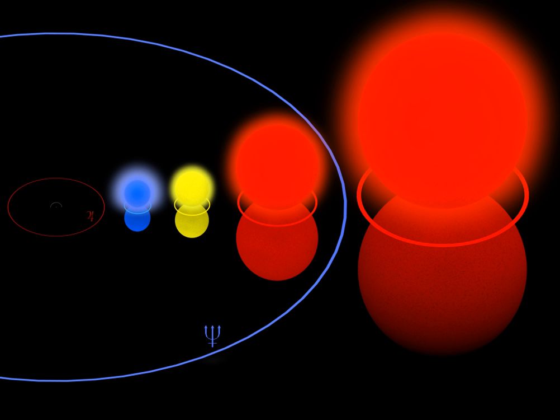Eta Carina, inside the Keyhole Nebula in the southern constellation of Carina, is extremely massive — possibly as much as 120–150 times the mass of the Sun — and is 4–5 million times as luminous. It is possibly a different type of object from the LBVs, or extreme for an LBV. P Cygni, in the northern constellation of Cygnus, is the prototype for the characteristic LBV spectral lines. S Doradus, in a nearby galaxy called the Large Magellanic Cloud in the southern constellation of Dorado, is the prototype variable; LBVs are still often called S Doradus variables.